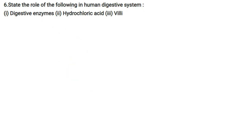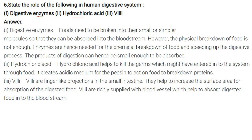State the role of the following in the human digestive system: digestive enzymes, hydrochloric acid, and villi. Digestive enzymes: food needs to be broken into smaller or simpler molecules so they may be absorbed into the bloodstream. Physical breakdown alone is not enough; enzymes are required for the chemical breakdown of food, speeding up the digestive process so products of digestion become small enough to be absorbed by the body.